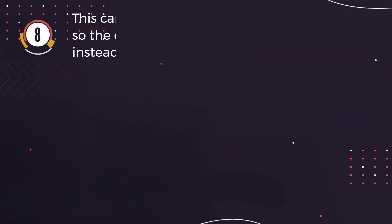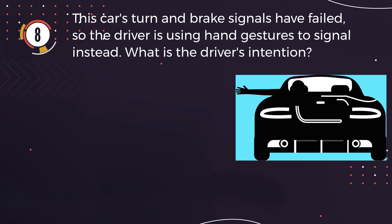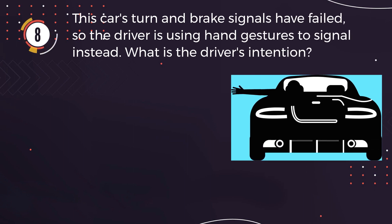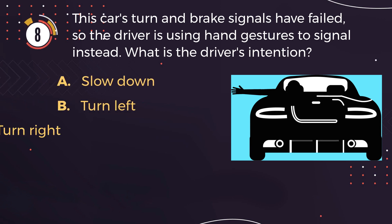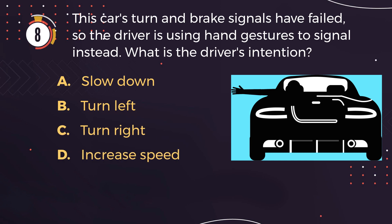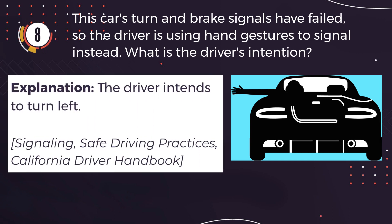Number 8. This car's turn and brake signals have failed, so the driver is using hand gestures to signal instead. What is the driver's intention? A: Slow down. B: Turn left. C: Turn right. D: Increase speed. The correct answer is B: Turn left. Explanation: The driver intends to turn left.